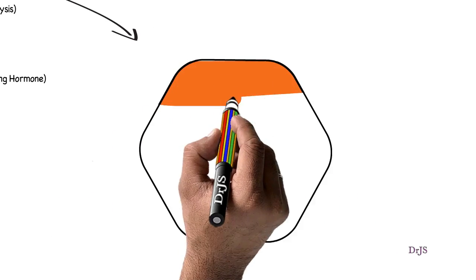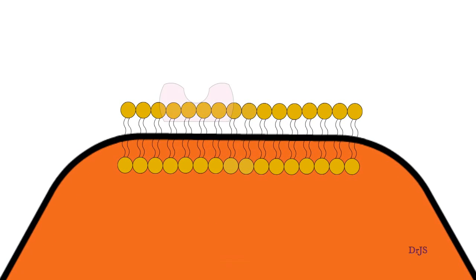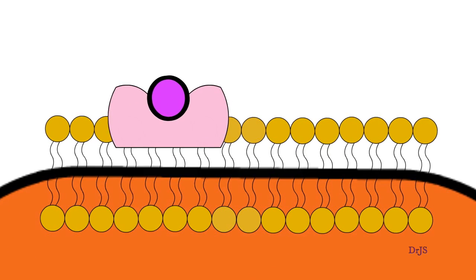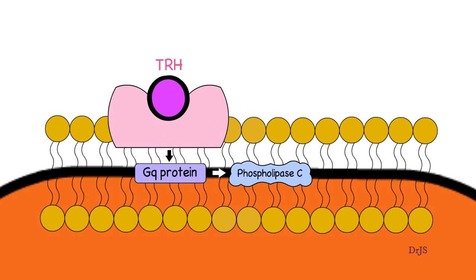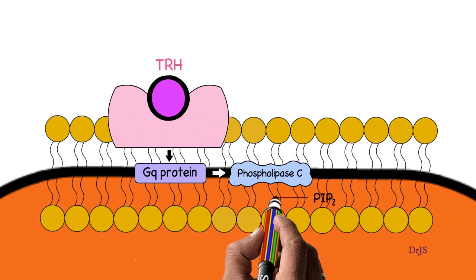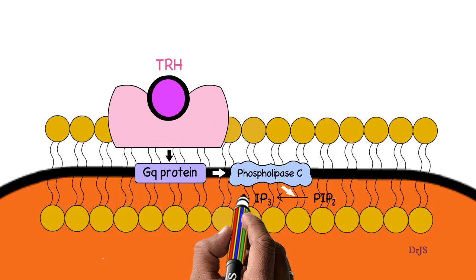To understand the mechanism I am magnifying one thyrotroph. As the thyrotropin releasing hormone attaches to the transmembrane receptor on the thyrotroph, the GQ protein activates the phospholipase C enzyme present in the membrane. This enzyme converts phosphatidylinositol bisphosphate into inositol triphosphate and diacylglycerol. Both are called second messengers.